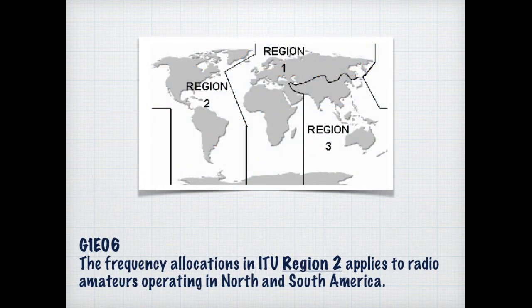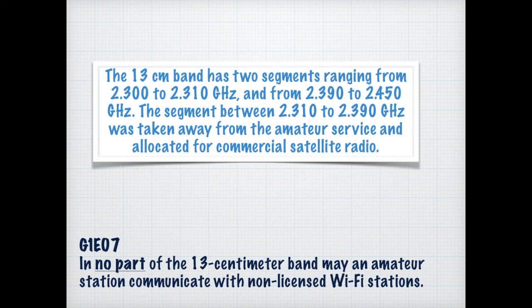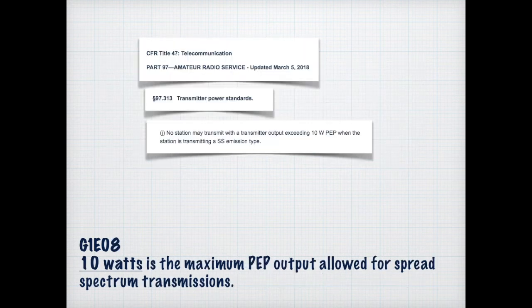As an amateur radio operator, particularly general class, who's capable of reaching out and going further, you need to know where the boundaries are. The boundaries of ITU Region 2 include North and South America. Because the 13-centimeter band is within the Wi-Fi area, we're not allowed to contact or communicate with non-licensed Wi-Fi stations such as commercial ones. Due to the nature of spread spectrum transmissions — because it goes from one frequency to another — the power output is limited to 10 watts peak envelope power.